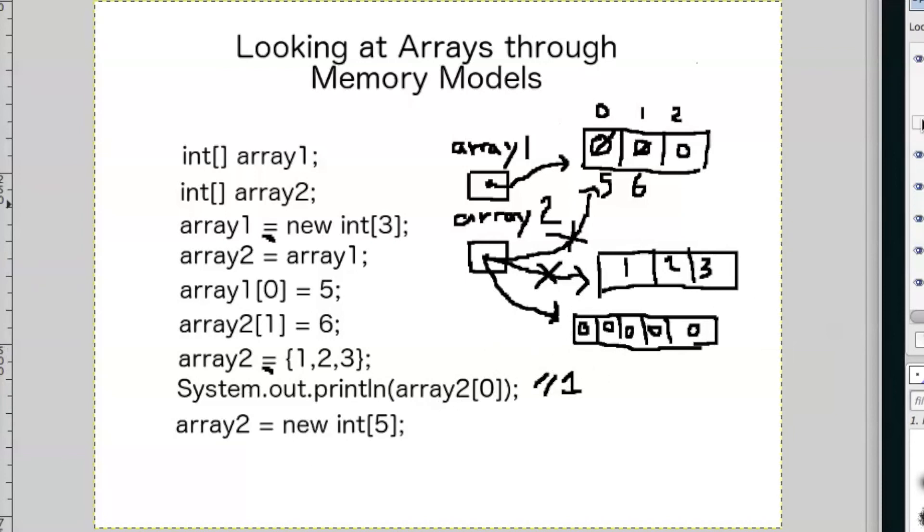So now when we do system.outprintln on the first index, it's going to print out a 0.